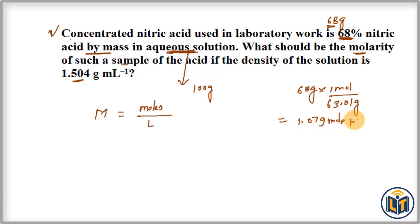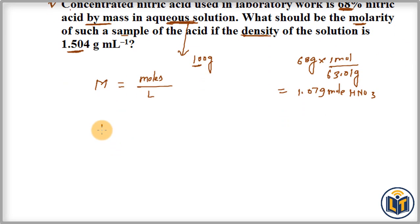Next, we calculate the volume of solution in liters. Here you can see the density of the solution is given, and we have the mass of solution. We can apply the density formula to calculate volume. Density D equals mass upon volume, so we can rearrange this formula: V equals M upon D.